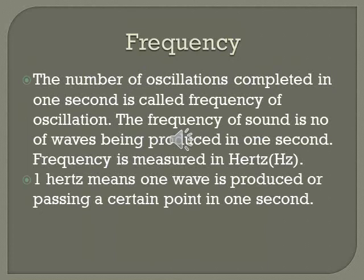Frequency. The number of oscillations completed in one second is called frequency of oscillation. The frequency of sound is the number of sound waves being produced in one second. Frequency is measured in the unit of hertz, symbol Hz. One hertz means one wave is produced or is passing through a certain point in one second.